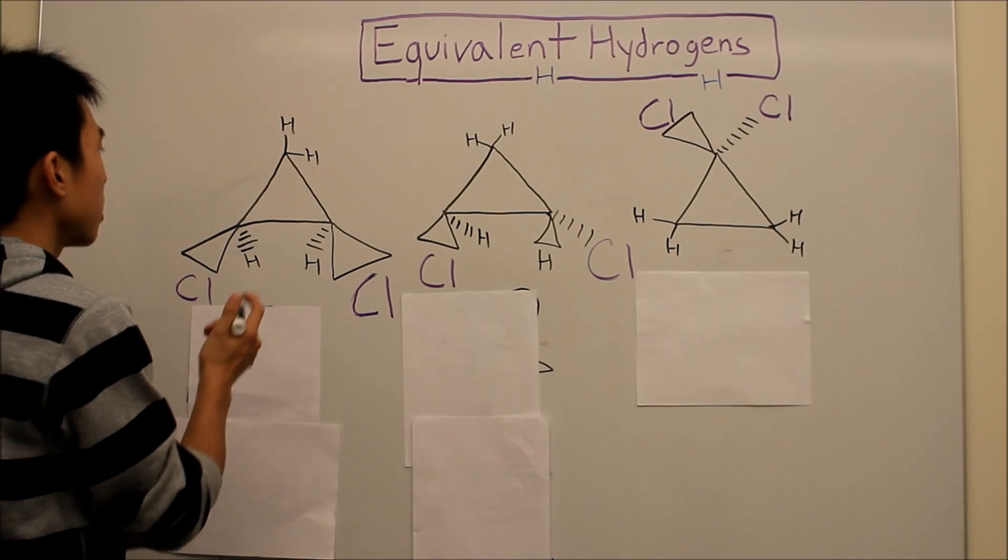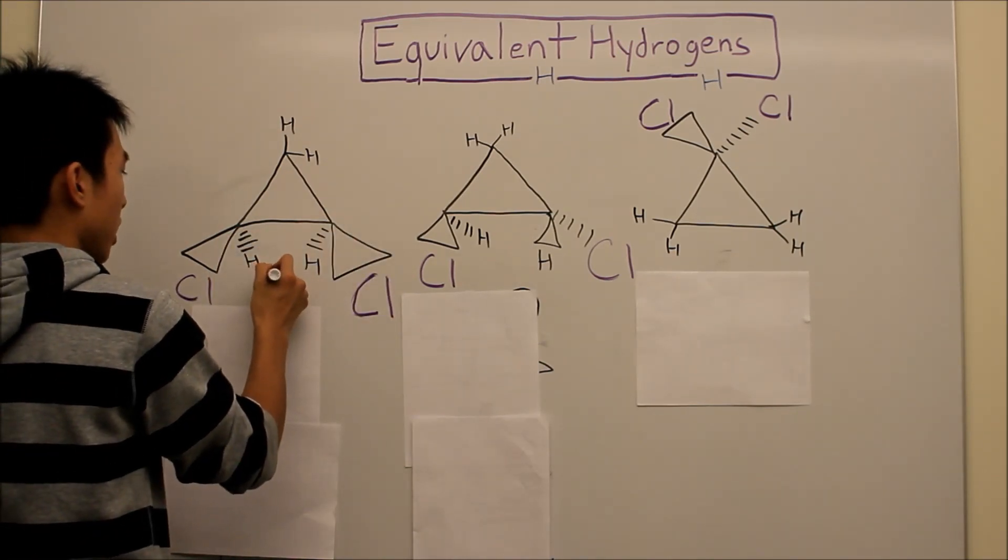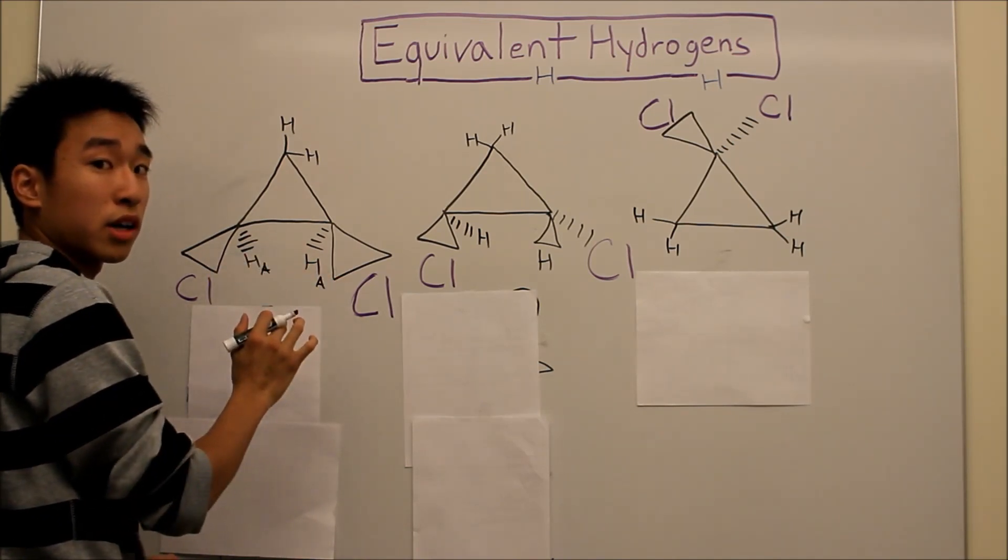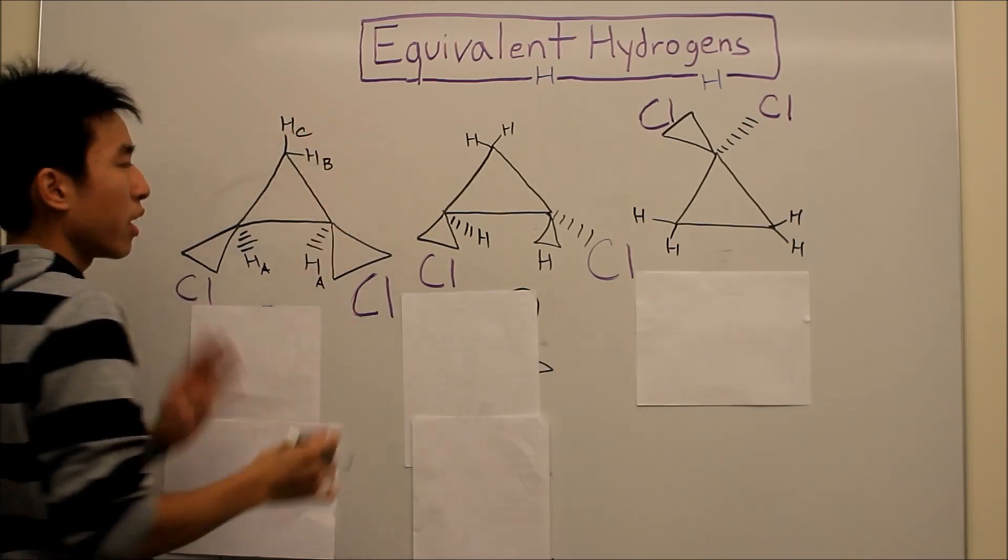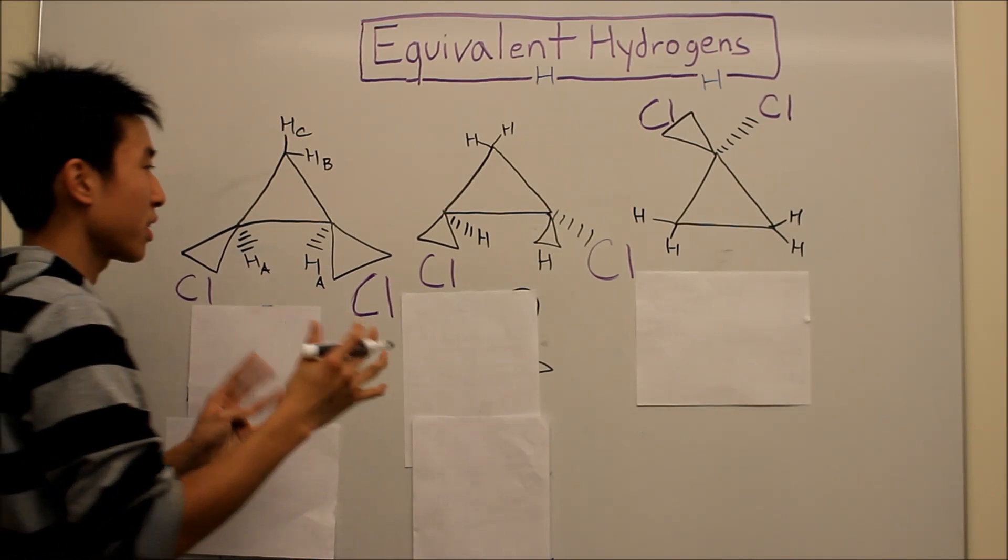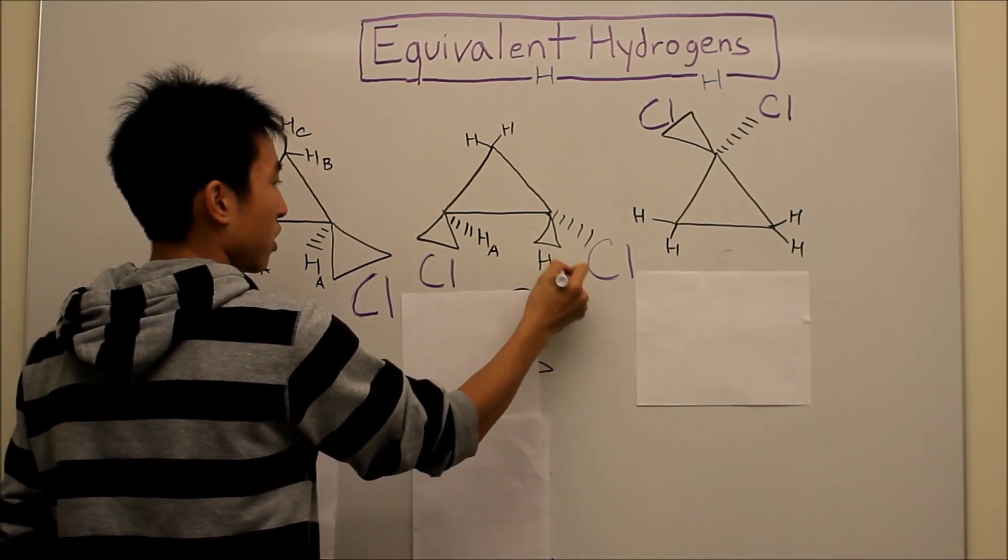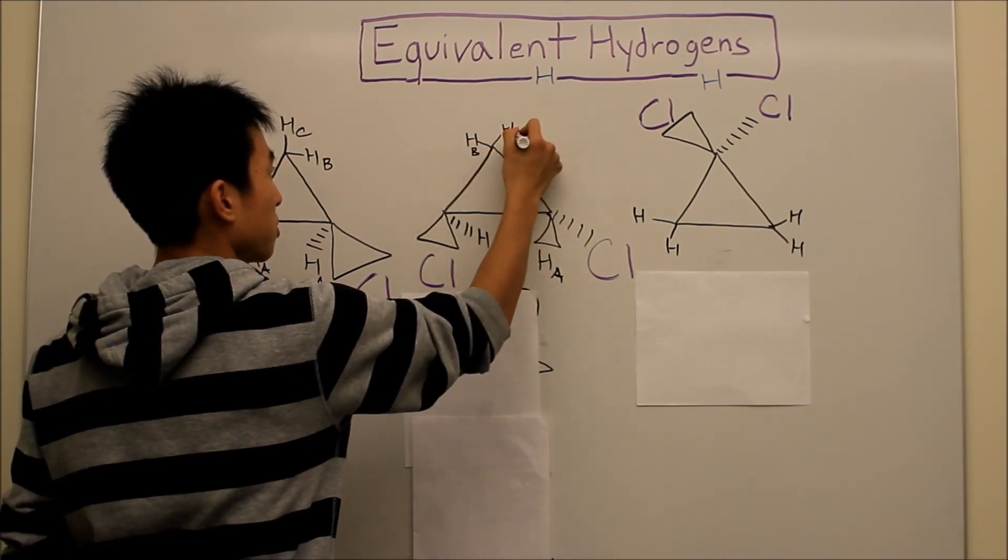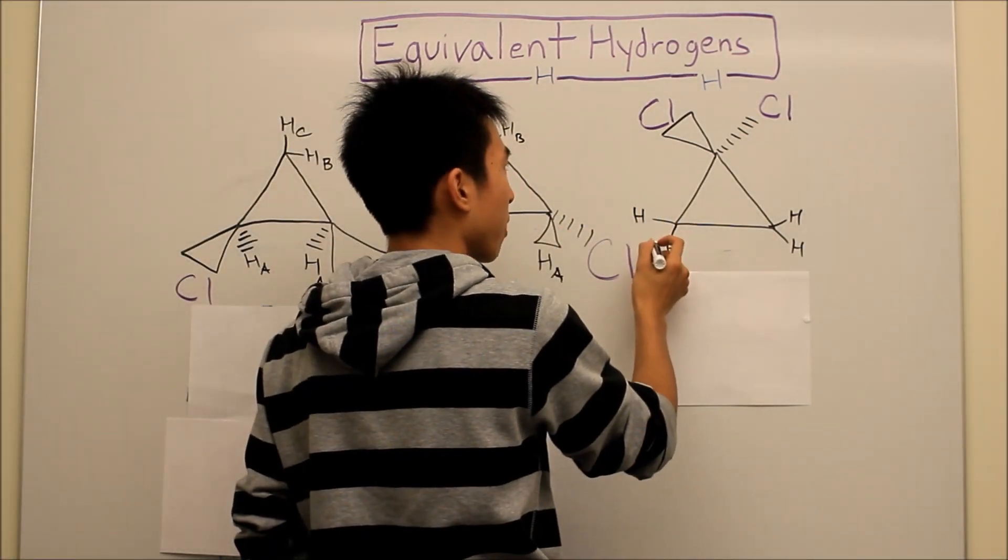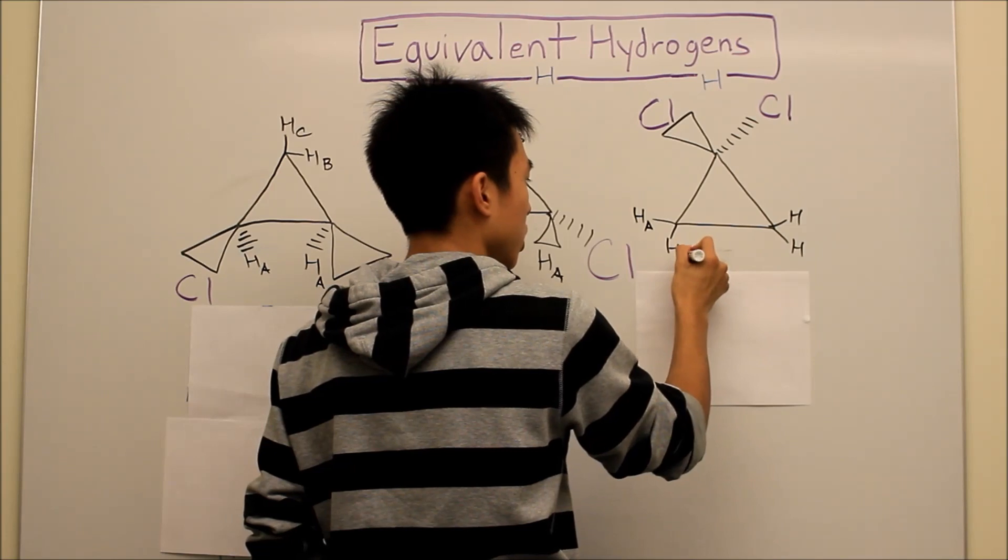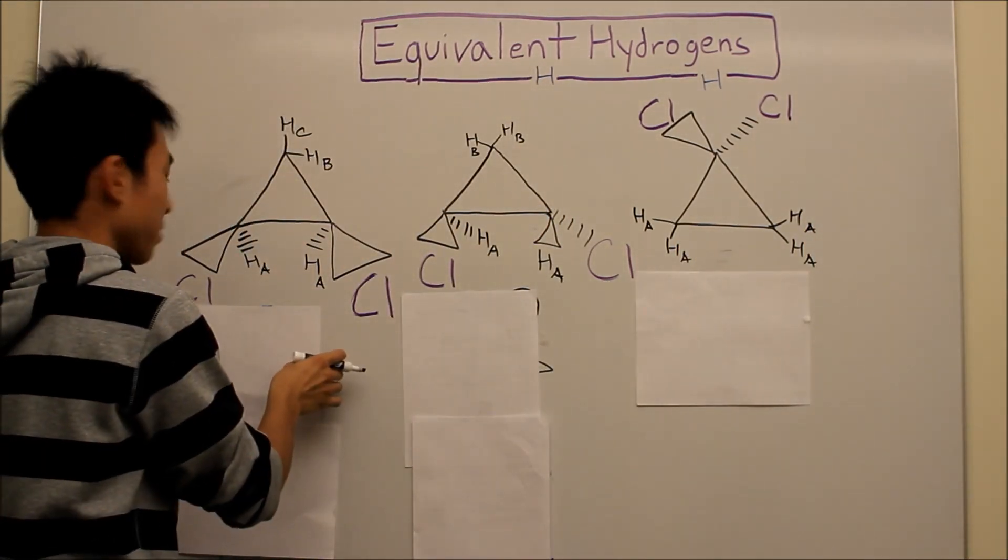So this one here, I'll just tell you first, and I'll show it to you later. This one here, you have Ha, Ha, that's one group of equivalent hydrogens. Here you have Hb, and here you have Hc. I know you're thinking like, what the heck, I thought they were the same, but I'll show you in a second. Here you have Ha, here you have Hb and Hb. They're equivalent in this case. I'll show you in a second. Don't worry. Here, they're all equivalent. Ha, Ha, Ha, Ha. Now I'm going to show you it so you don't have to freak out.